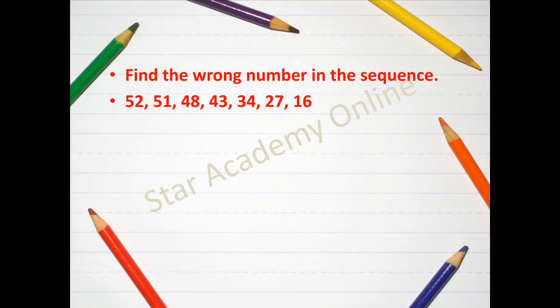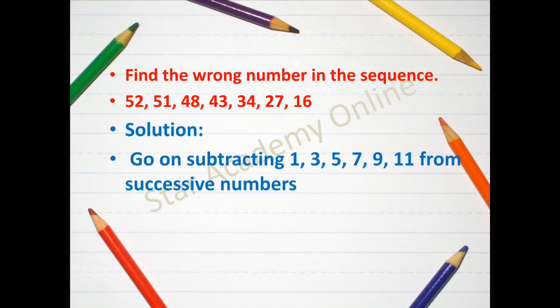Moving on to another question, find the wrong number in the sequence. Now here the numbers given in the sequence are in the decreasing order. So we can definitely think about subtracting something. Now if you go on subtracting 1, 3, 5, 7, 9, 11 from the successive numbers you will get these answers.